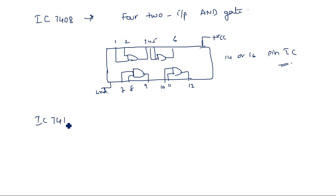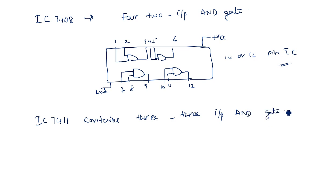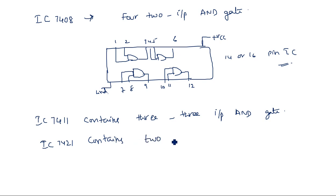IC 7411 contains three-input AND gates. IC 7421 contains two four-input AND gates. That means IC 7408 has four 2-input AND gates, IC 7411 has three-input AND gates, and IC 7421 has two four-input AND gates. As we go to higher IC numbers, the number of inputs for the AND gates also increases.